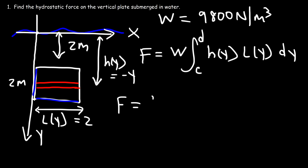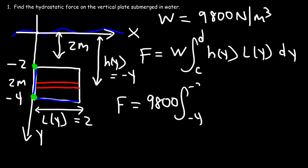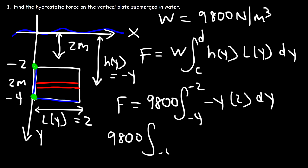So for this problem, F equals 9800 times the integral from c to d. The point c is at negative 4 and d is at negative 2 along the y-axis. So we integrate from negative 4 to negative 2, with h(y) = negative y and l(y) = 2, giving us 9800 times the definite integral from negative 4 to negative 2 of negative 2y dy.